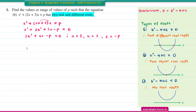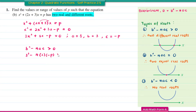Since the discriminant is greater than 0, we substitute: 3 squared minus 4 times 3 times negative P greater than 0. This gives 9 plus 12P greater than 0.